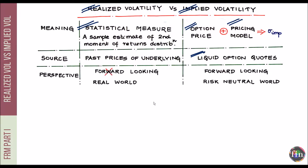Now comes the perspective. Realized volatility has a backward-looking element — it uses historically observed prices, assuming the past will carry forward into the future; that the future will resemble the past. Implied volatility, on the other hand, is more forward-looking. It goes into an option pricing model, and the person pricing the option today wants to put in a volatility number representative of what volatility will be going forward.